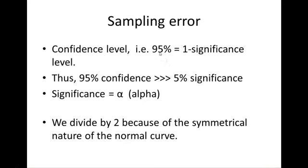Well, if it's a 95% confidence level, then the significance level is the complement of that, or 1 minus 95%. Thus, a 95% confidence level gives you a 5% significance level.